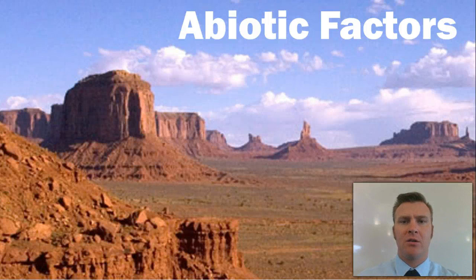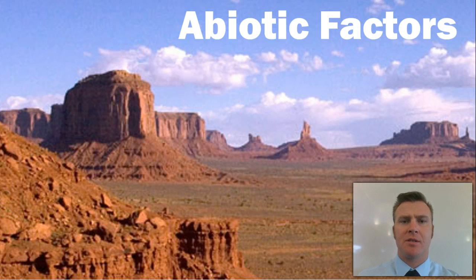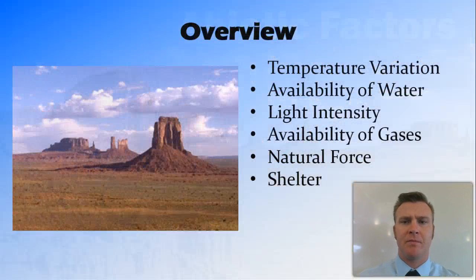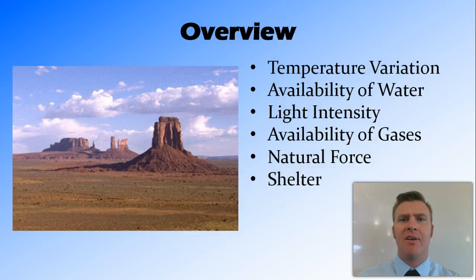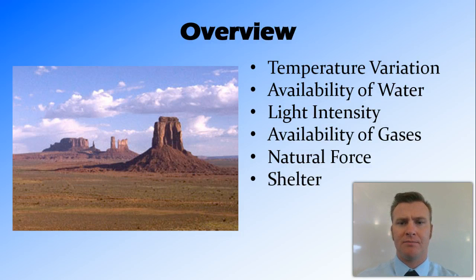In this video, we're going to look at some abiotic, or non-living, factors that can be found in ecosystems. I'm going to talk about temperature variation, availability of water, light intensity, availability of gases, natural forces, and shelter.